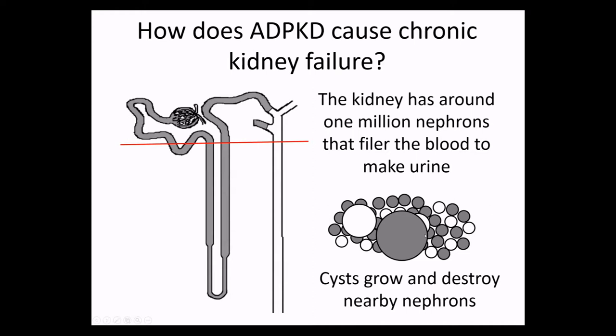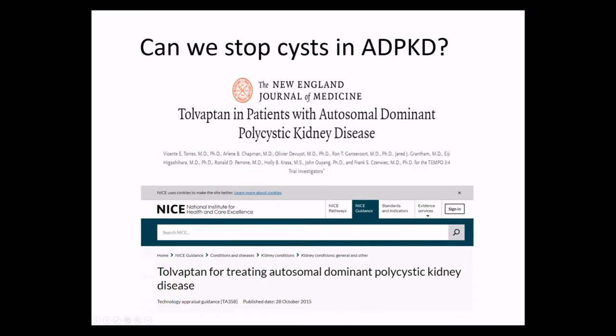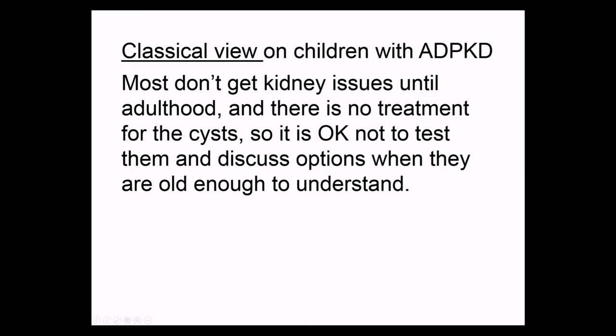The exciting thing currently in the adult world is that we can now, if not stop cysts, we can slow them down with a treatment called Tolvaptan. This was published in the New England Journal of Medicine — a study of several thousand patients showing that Tolvaptan reduces the progression of cysts. In the UK, NICE approved it in October 2015 for certain indications. So we've been using it for about two and a half years in the UK for adults only. There's great news in adults. It doesn't quite apply to children yet, but I think that may change soon.